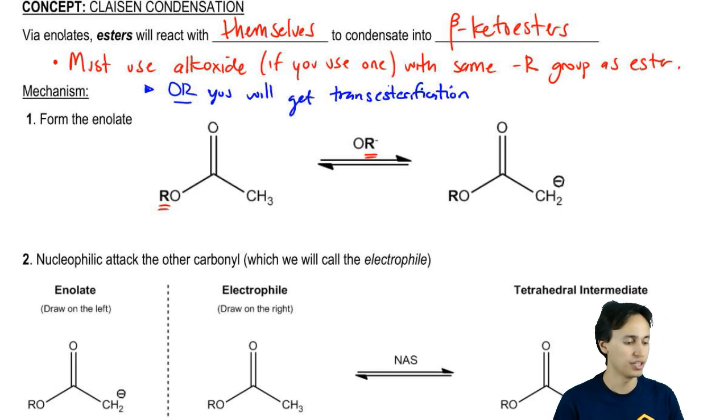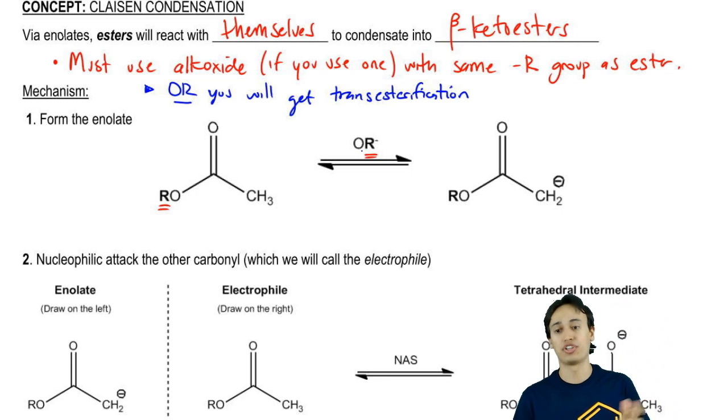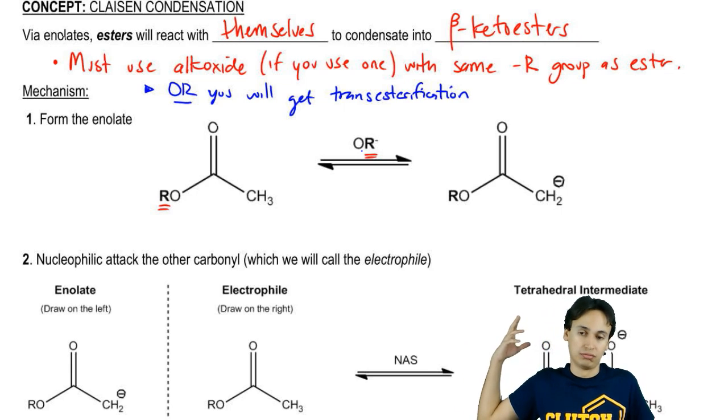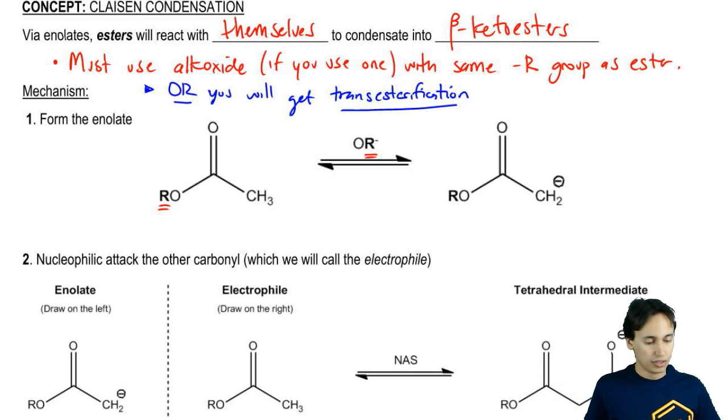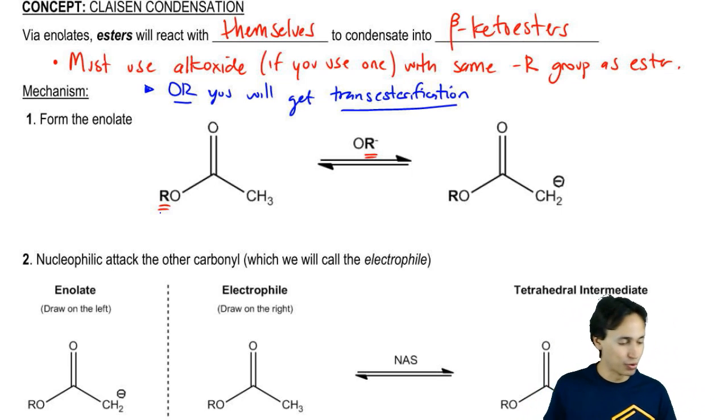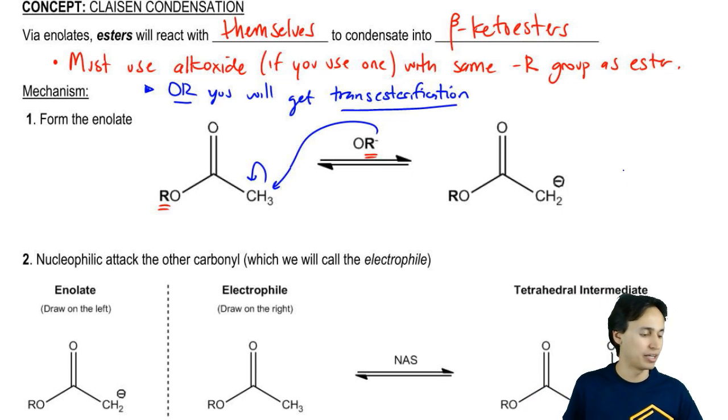If you get a transesterification, then you have no idea what happened in your reaction. Instead of getting what you were thinking which would have been a Claisen or whatever, you're just going to get a transesterification instead. If this word sounds totally foreign and you have no idea what I'm talking about, then I would definitely recommend going to the clutch search bar and searching transesterification. Thankfully, my R groups are both bolded so I guess that means they're the same. I pulled off a proton and I got my enolate.